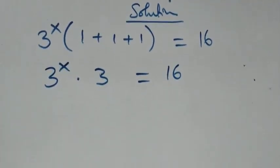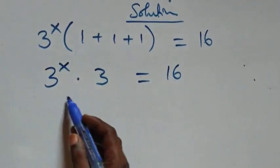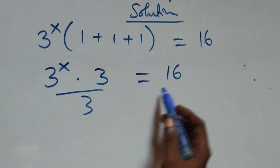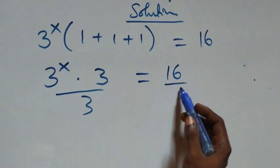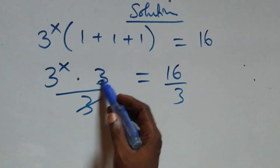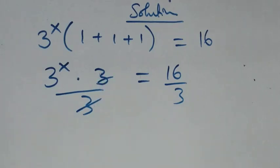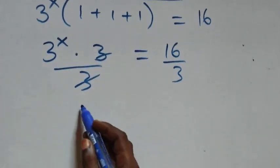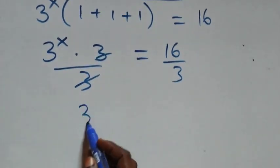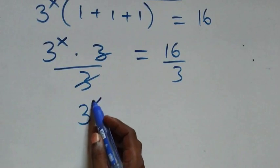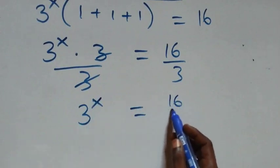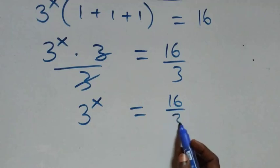Our next step: we divide both sides by 3. Dividing this side by 3 and this side by 3, the threes cancel each other. What we have left becomes 3 raised to πx equals sixteen over three.